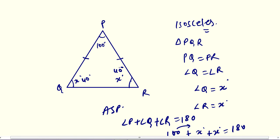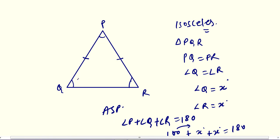Same type of question next. One of the base angles of an isosceles triangle is given. Base angle means — the vertex angle is at the top, and the two base angles are at the bottom. It is given that one base angle is 52 degrees. Since two sides are equal, both base angles are 52 degrees. Then by angle sum property, 52 plus 52 is 104; subtract from 180 and you get 76 degrees for the vertex angle.